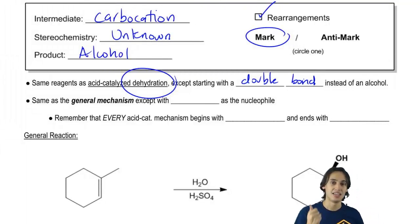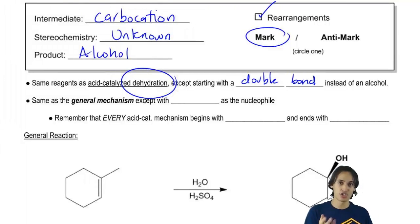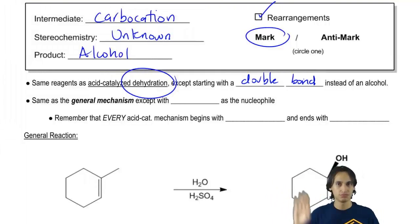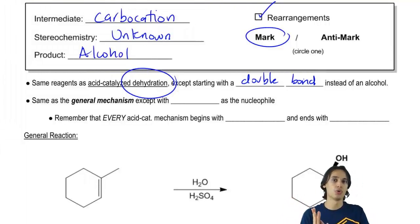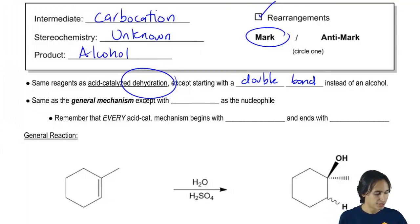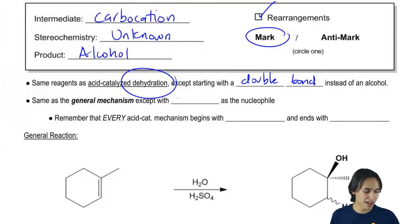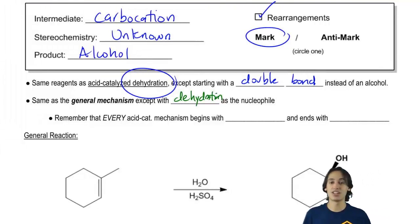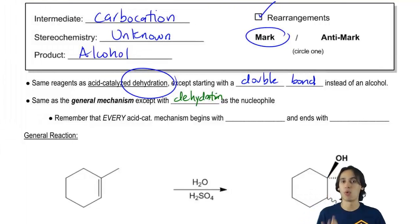So in a dehydration reaction, all you're going to do is look at your starting molecule. If it's a double bond, you know that your professor wants you to go towards the alcohol side. This is actually also going to be the same general mechanism as dehydration, except it's going to be with the double bond as the nucleophile, not water.